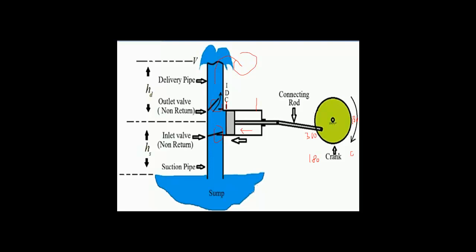In the overall working of the reciprocating pump, water is delivered alternatively, not continuously, because at the time of suction the delivery valve is closed and water is delivered only during the delivery stroke when the delivery valve is opened and the suction valve is closed. It means without an air vessel there is no continuous flow to the reservoir — that is intermittent.